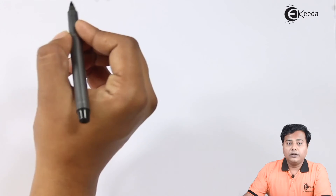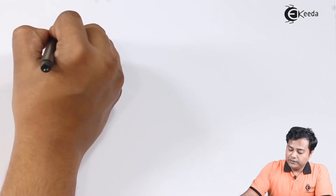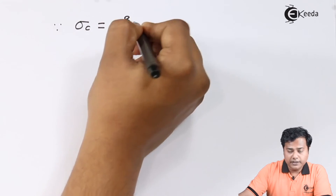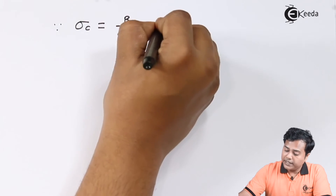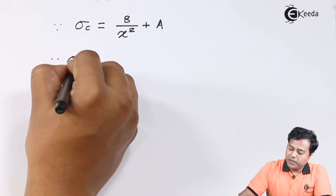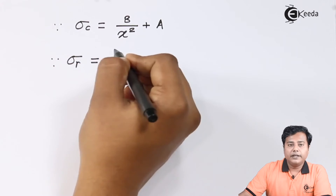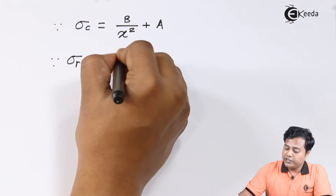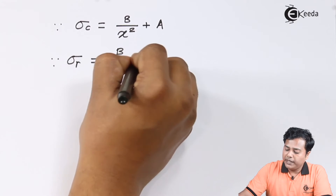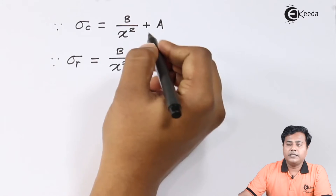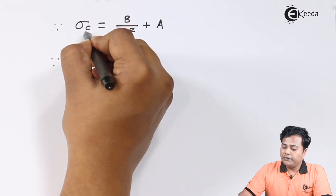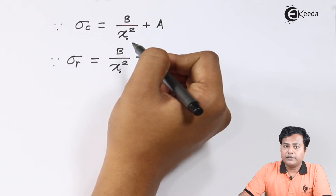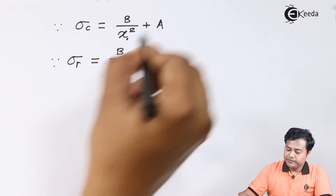We know that the Lame's equations are: Sigma C is equal to B divided by X square plus A, and Sigma R, the radial stress, is equal to B divided by X square minus A. We have been given the radii and the pressure values.